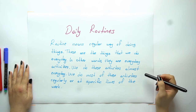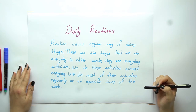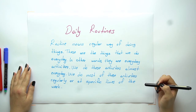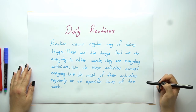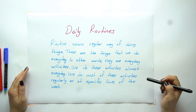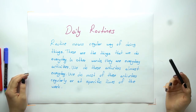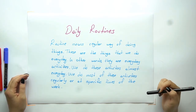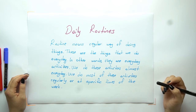Now we will continue with daily routines. What are they? Routine means a regular way of doing things — these are the things that we do every day. In other words, they are everyday activities. We do these activities almost every day, regularly or at specific times of the week. For example, you always get up in the morning, you have breakfast every day, you drink water every day, you go to bed every day, you have dinner every day. Since you do them every day, we call them everyday activities.